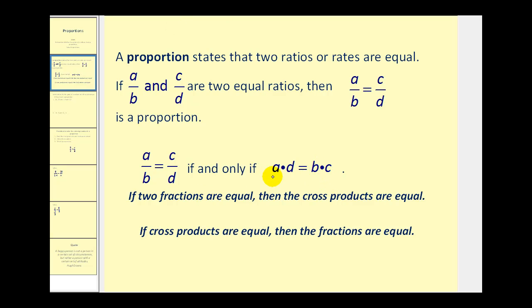But the key concept here is if we have a proportion, a×d must equal b×c. And if a×d equals b×c, we must have a proportion.